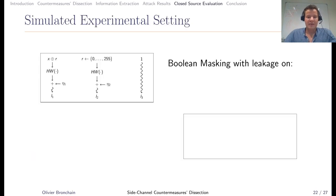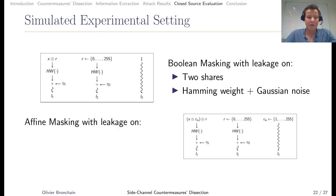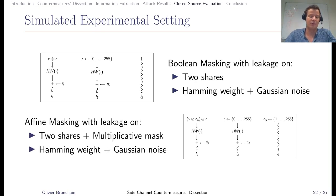The first setting is standard boolean masking, where there are two shares and each share leaks in Hamming weight plus Gaussian noise. The second simulation setting is affine masking, representative of the previous implementation, where there is a left branch, right branch, and multiplicative mask. The right branch and left branch leak with Hamming weight plus noise, while the multiplicative mask is given in clear to the adversary.